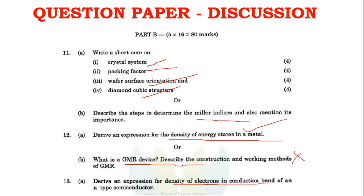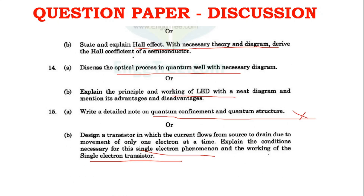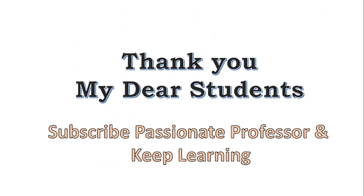Unit 2 is tricky, and Unit 5 mostly focuses on single electron phenomena, quantum confinement, and quantum wells, wires, and dots. At least one question from that section is sure to come. With such a vast syllabus, choosing your questions wisely is important.